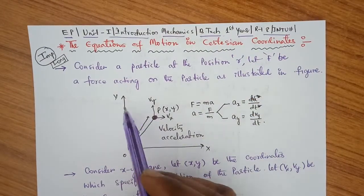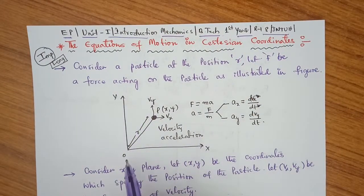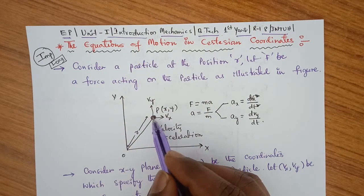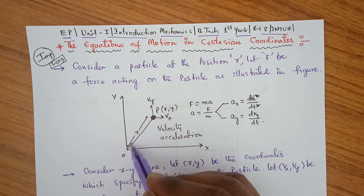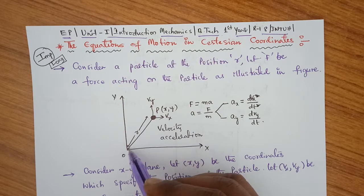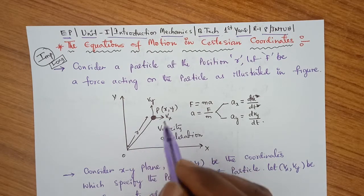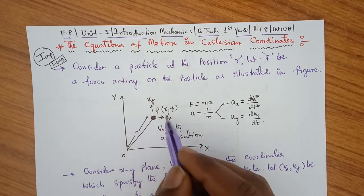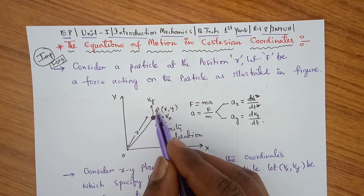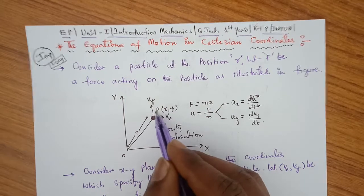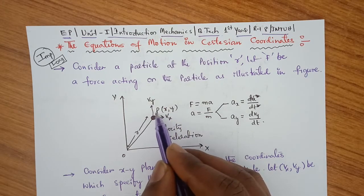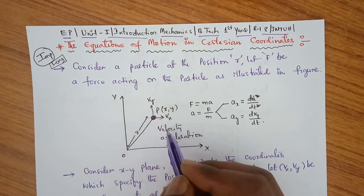This is a graph plotted between X and Y from the origin. Let us consider a particle located at a distance R. The position of the particle is R, and this particle is kept in the X,Y plane, so that the particle in coordinate form is P of X comma Y. This is the position of the particle in the X,Y plane.